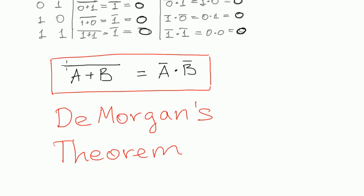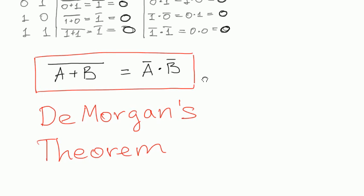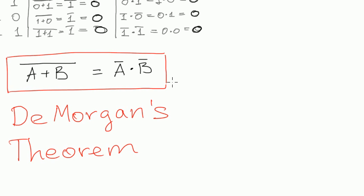And this could be generalized a bit. Like this. In general, A plus B plus C plus some kind of, let's say Z.